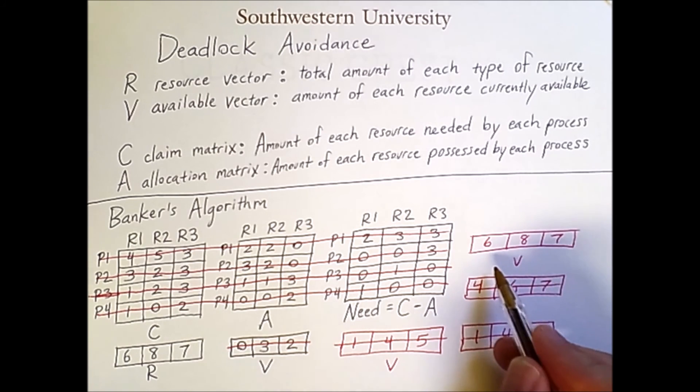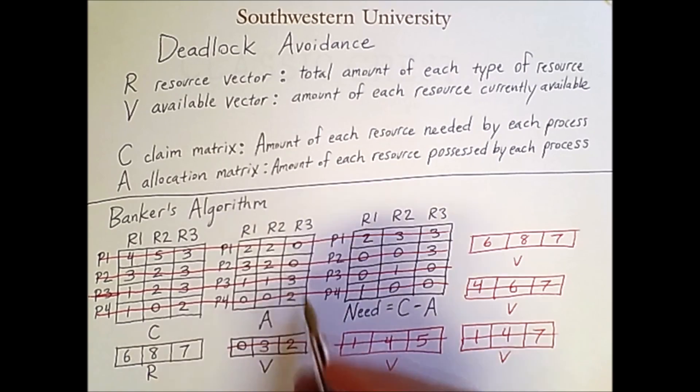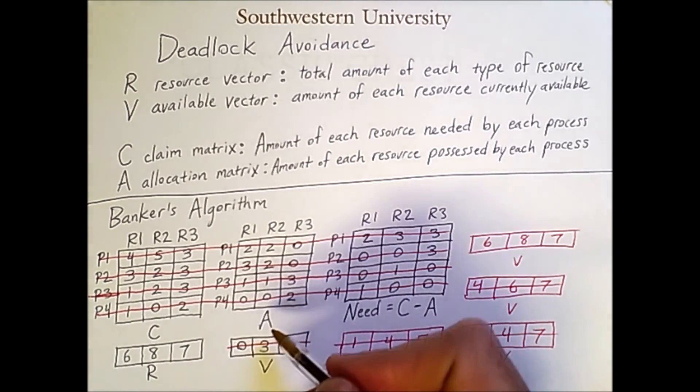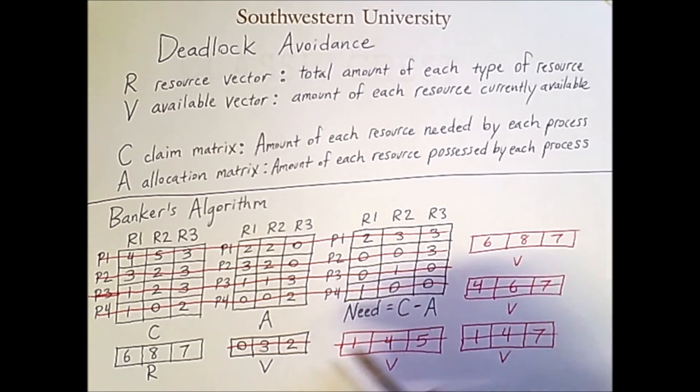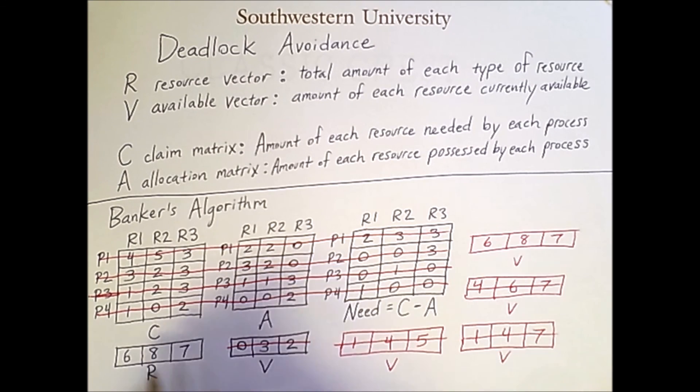And now the available vector equals the resource vector, which is one way of checking that you've done all your computations correctly. Naturally, because there are no processes running, no resources are allocated, so the number of units of available resource of each type should match the total available resources in the system.